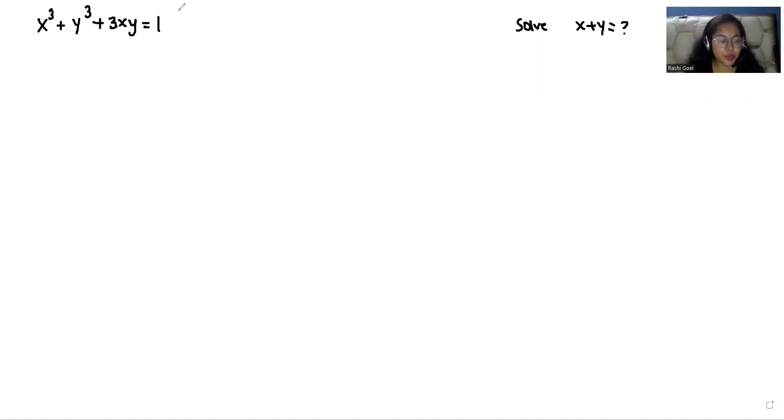Let's start with today's video. I'm going to use the identity: a³ + b³ + c³ - 3abc = (a + b + c)(a² + b² + c² - ab - bc - ca).